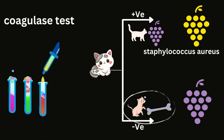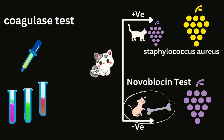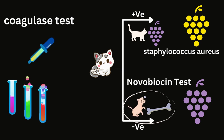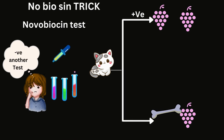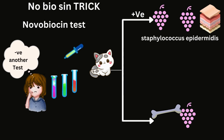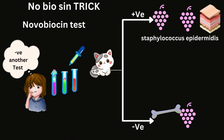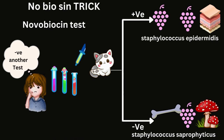The kittens that choose bones in the coagulase test have to undergo another test called the novobiocin test. Here, they'll be presented with grapes and bones and are once again expected to pick the grapes. The kittens who pick the grapes give a positive reaction and are hence going to be at the top — they are known as staphylococcus epidermidis, the bacteria present on the topmost layer of the skin. Those that fail to pick the grapes even in the novobiocin test are at rock bottom with the fungi and saprophytes, and are called staphylococcus saprophyticus.